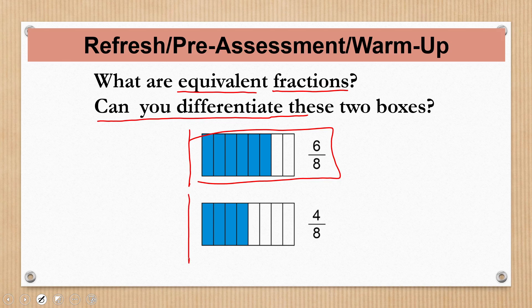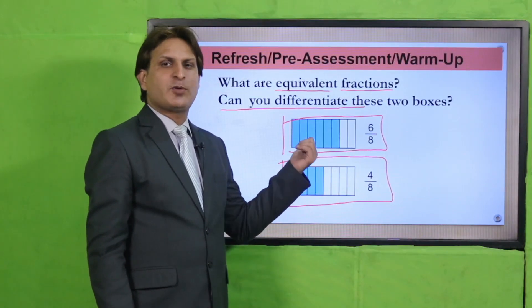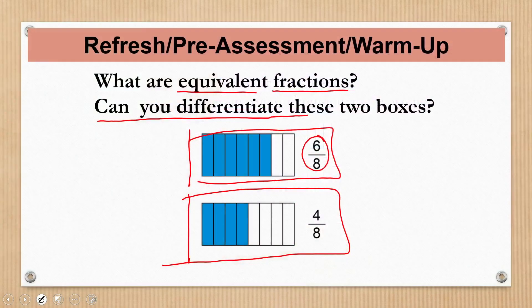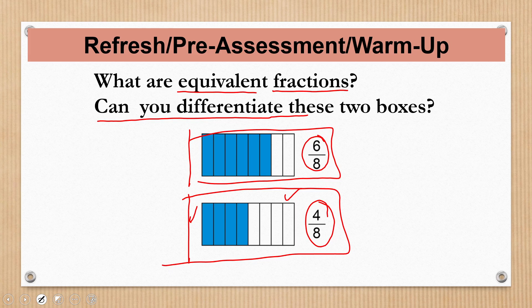ان two boxes میں دیکھیں difference کیا ہے دونوں میں. جو first box ہے اس کے اندر total small boxes 8 ہیں اور six boxes shaded ہیں، جن کو ہم نے fraction کی form میں write کر دیا ہے. Similarly, second box میں total 8 parts ہیں، shaded parts 4 ہیں اور unshaded بھی 4 ہیں، total small boxes 8 ہیں. اس کو بھی fraction کی shape میں write کر دیا ہے. اب ان کو compare کریں اور دیکھیں کیا یہ دونوں equivalent ہیں.